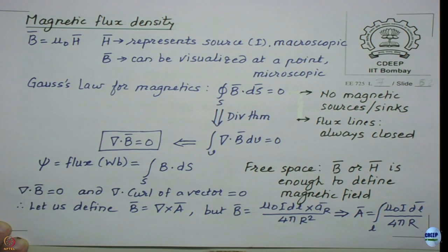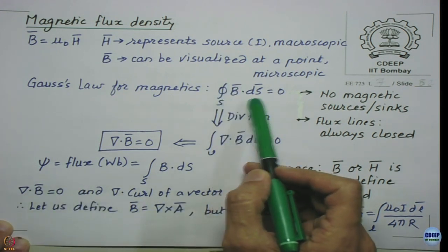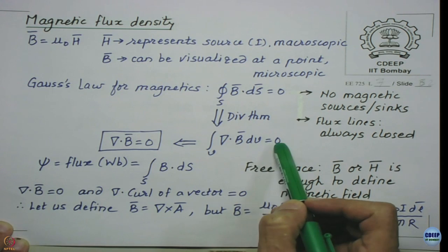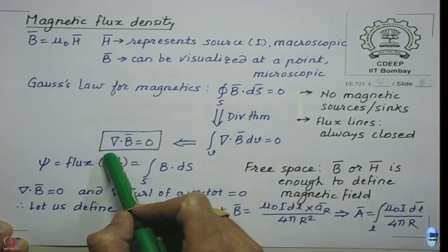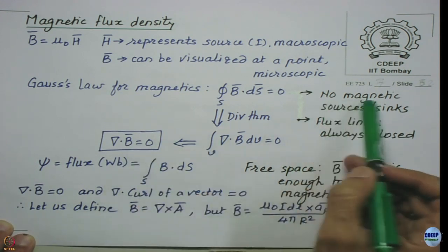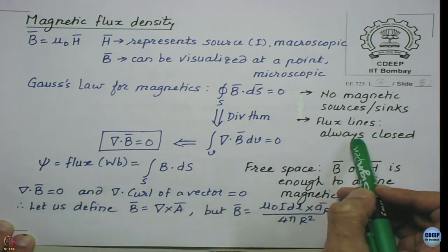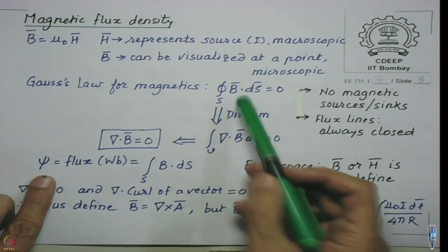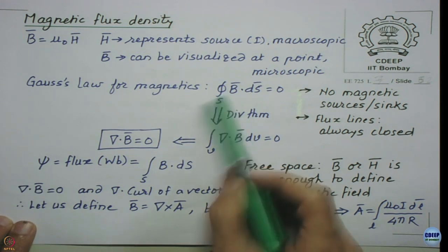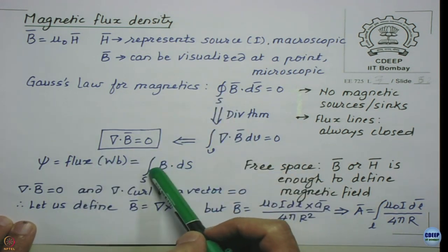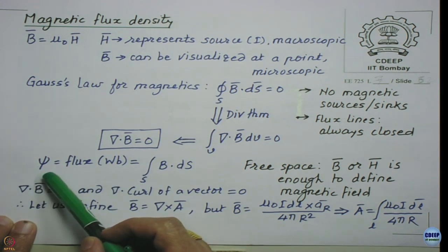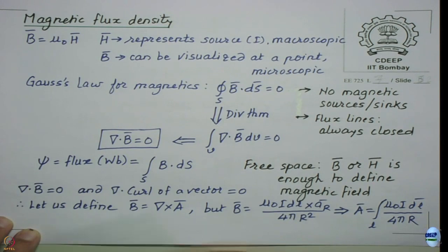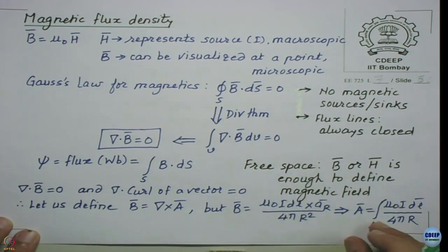Gauss's law of magnetics: the closed surface integral of B·dS equals zero. Applying the divergence theorem gives divergence B = 0, which is the second Maxwell's equation in point form. This tells us there are no magnetic sources or sinks and flux lines are always closed. Note that the open surface integral of B·dS gives the flux crossing that surface, but the moment you make it closed it becomes zero.